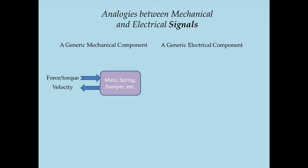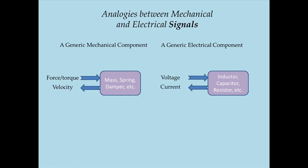Now if we think about a generic electrical circuit component — such as an inductor, capacitor, or resistor that you put on a breadboard — applied on this component is an electromotive force, another name for which is a voltage. And as a result of this voltage, there is a current that might flow through the component.